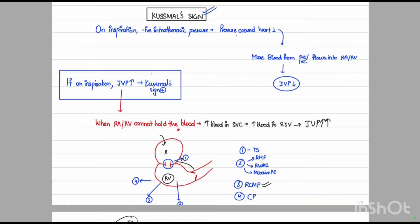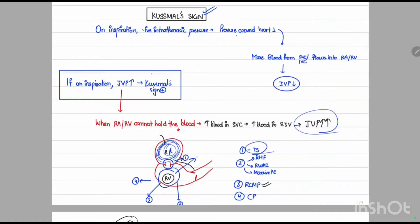If on inspiration the JVP increases instead of decreasing, this is known as Kussmaul's sign — that is, on inspiration, rather than a decrease, the blood flow in the external jugular vein increases. This happens when on inspiration the right atrium or right ventricle cannot hold enough blood, leading to pooling of blood in the SVC and external jugular vein. One condition is tricuspid stenosis, where there is increased blood in the right atrium leading to increased pooling in the SVC.